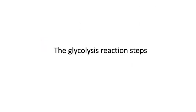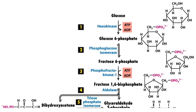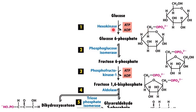The glycolysis reaction steps are as follows. In the first step, a phosphate group from ATP gets transferred to the glucose molecule present in the cell cytoplasm. This produces glucose 6-phosphate. This step is catalyzed by the enzyme called the hexokinase enzyme.